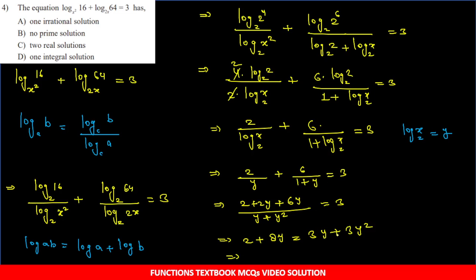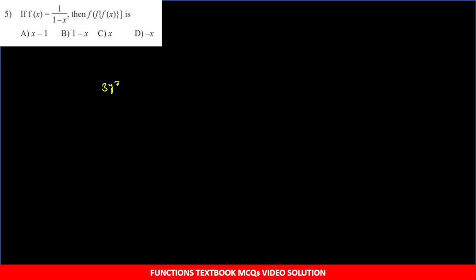Cross multiplying: (1 + Y)·2 + 6Y = 3·Y·(1 + Y). So 2 + 2Y + 6Y = 3Y + 3Y². Simplifying: 2 + 8Y = 3Y + 3Y². Rearranging: 3Y² - 5Y - 2 = 0. Quadratic equation bani Y mein.